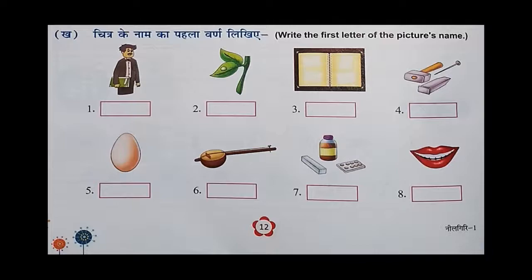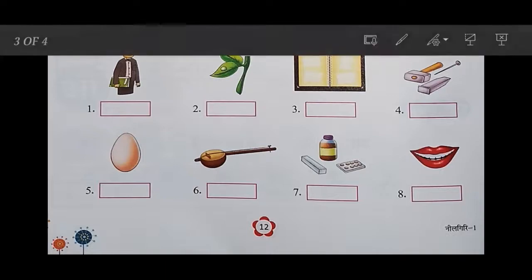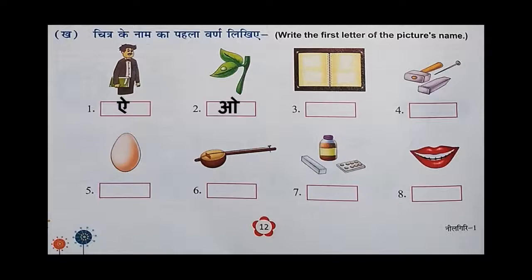What is the first picture? It is I'd work it, so you have to write I in the box. And the second picture is O say o's, so what you will be writing in the second box? You have to write O. What is in the third picture? It is album, so what you will be writing in the third box? A.